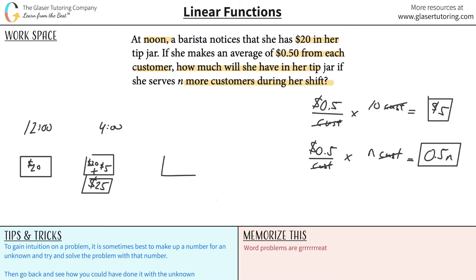So essentially now, the box still has $20 in it. This is now 4 o'clock again, but this is just with an unknown number of customers, and I have to add then this thing to it. So that would be 0.5N. You see the pattern?